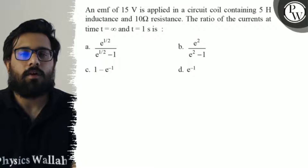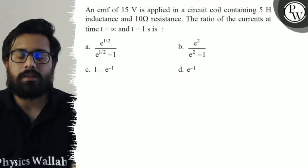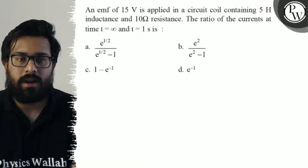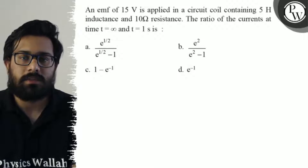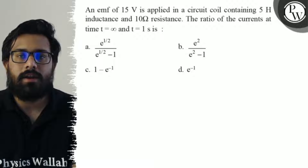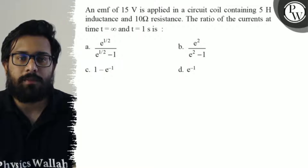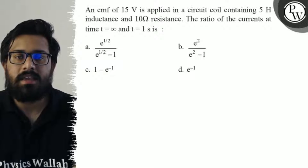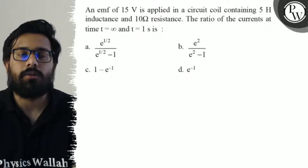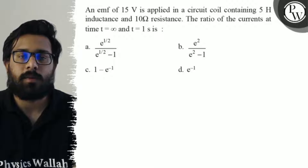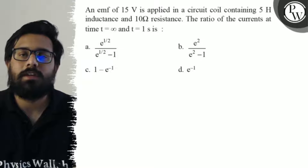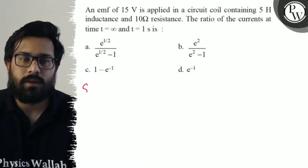Let us see the question. An EMF of 15 volt is applied in a circuit containing 5 Henry inductance and 10 ohm resistance. The ratio of the currents at t equals to infinite and t equals to 1 is: first option is e raised to power 1/2 upon e raised to power 1/2 minus 1; second option is e square upon e square minus 1; third option is 1 minus e raised to power minus 1; and fourth option is e raised to power 1 plus 1.